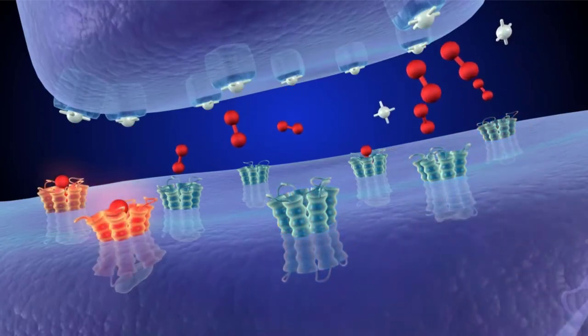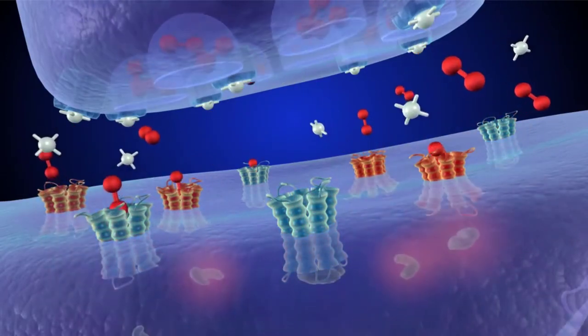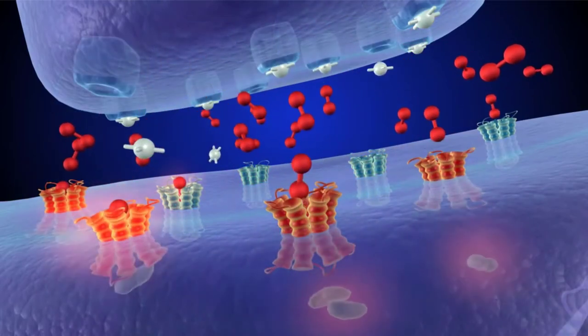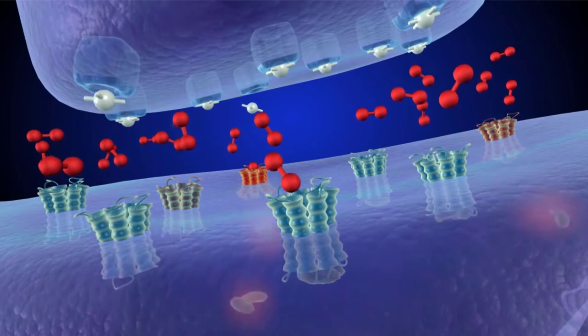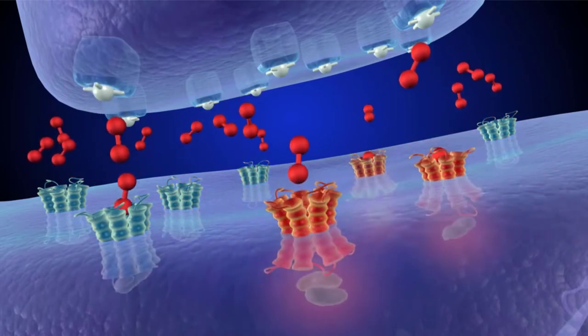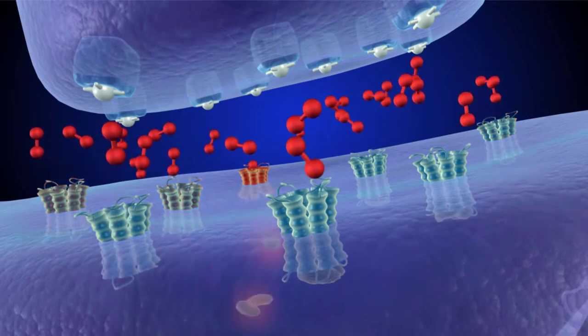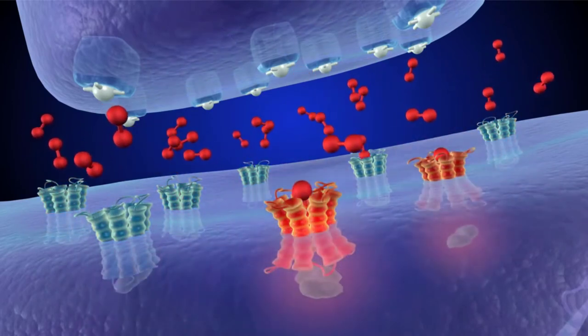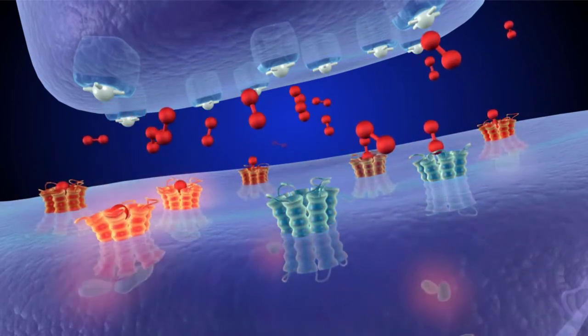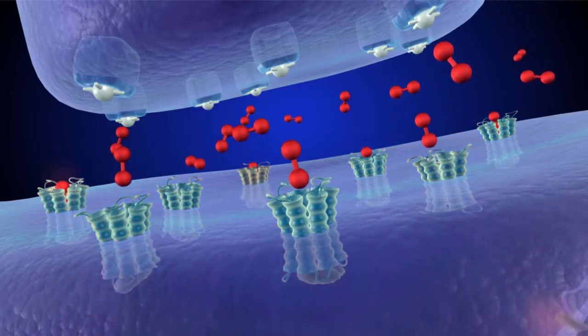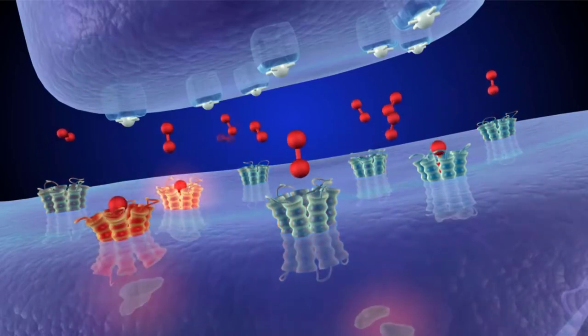Since the dopamine now cannot re-enter the presynaptic cell, it begins to accumulate in the synapse where it can reach abnormally high levels and remain there much longer than usual. This causes the postsynaptic cell to become hyperactivated, creating an incredibly powerful association between the euphoric experience and the behavior which introduced it. The result is a limbic drive to repeat the experience, which if not modulated by the prefrontal cortex, will lead to further drug-seeking behavior.